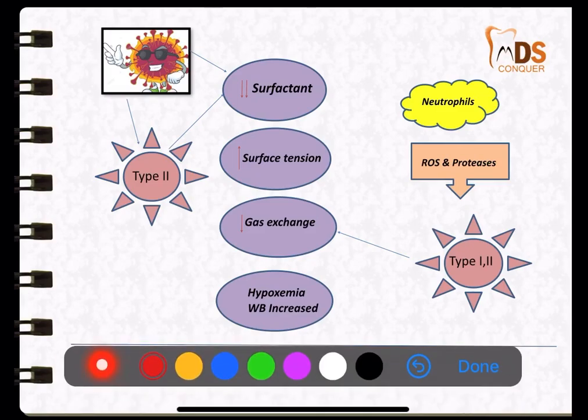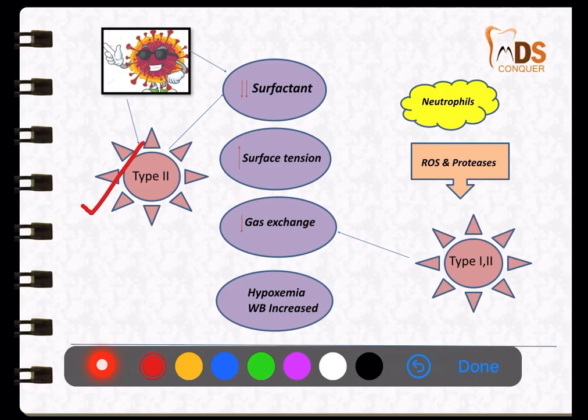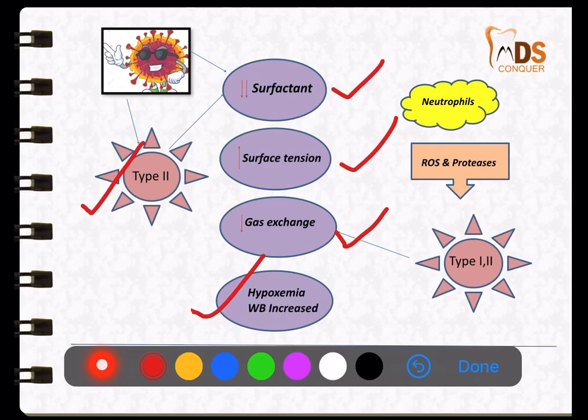This dreadful virus — coronavirus — affects the type 2 pneumocytes in the early stage. Type 2 pneumocytes are responsible for releasing surfactant and maintaining surface tension. As they are damaged, there is a decrease in surfactant, because of which surface tension increases. This finally causes the collapse of the alveolus, resulting in decreased gaseous exchange. It results in a condition called hypoxemia — the concentration of oxygen in the blood decreases — and the person faces increased oxygen demand, because of which the alveoli become inflated and the work of breathing increases.